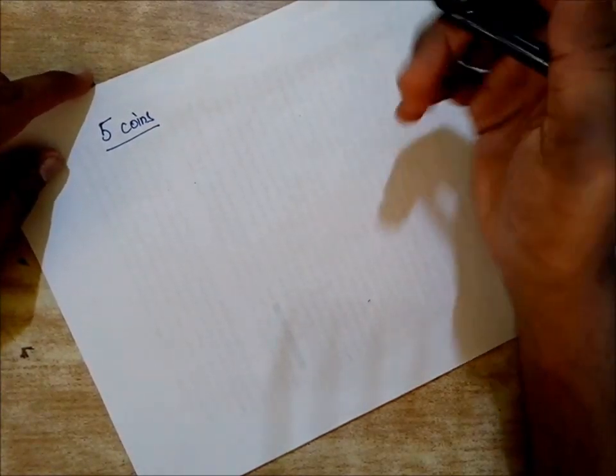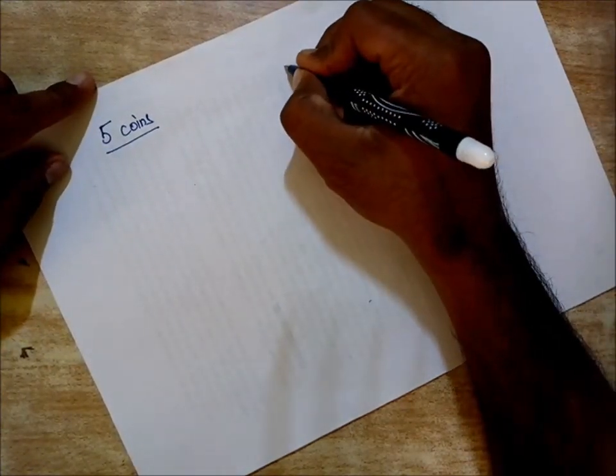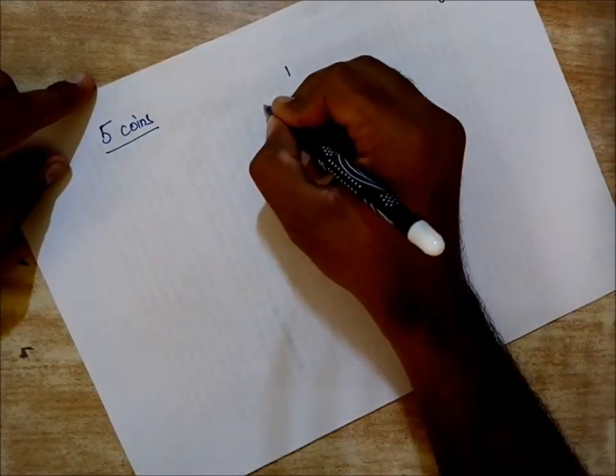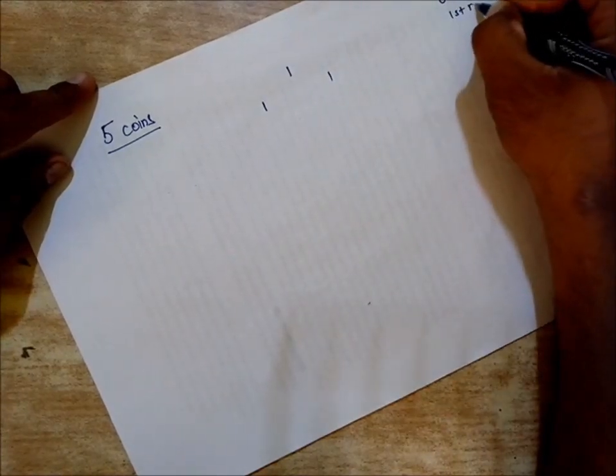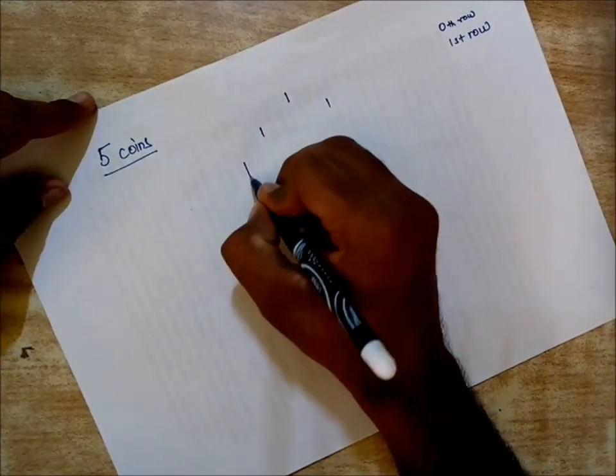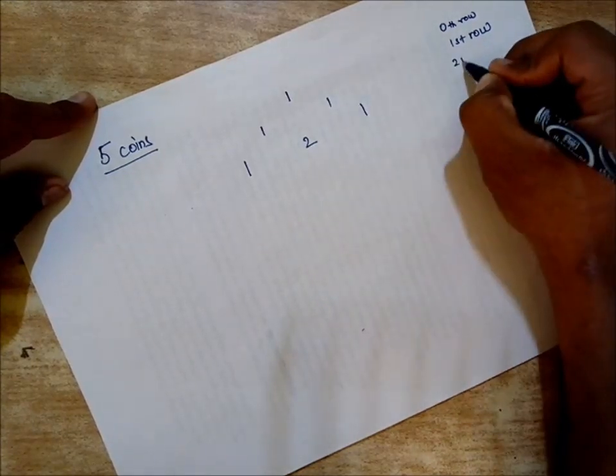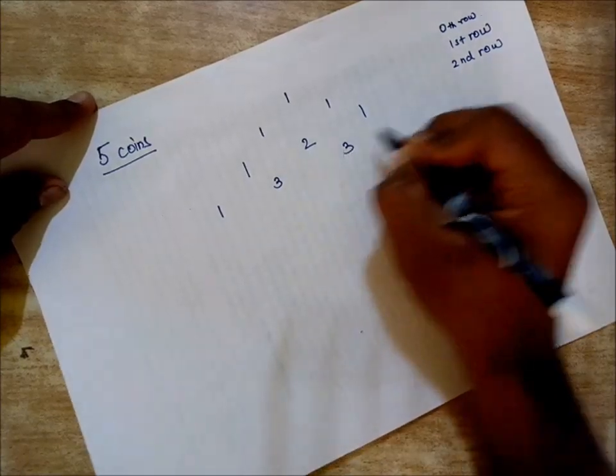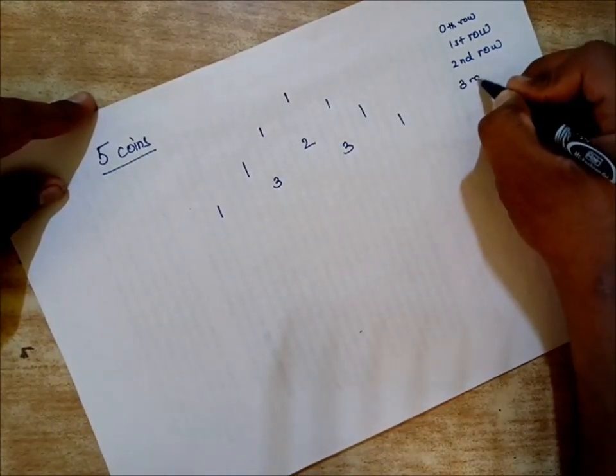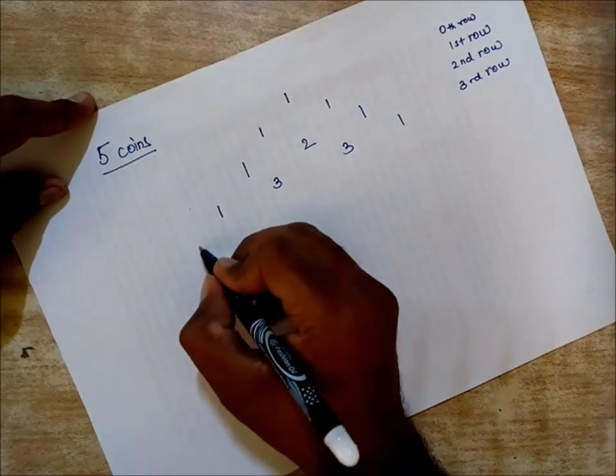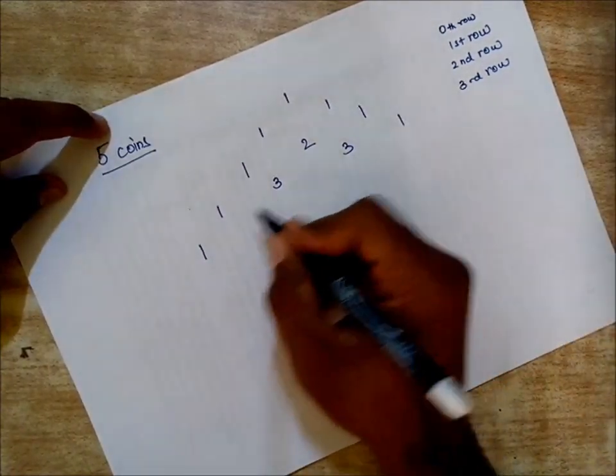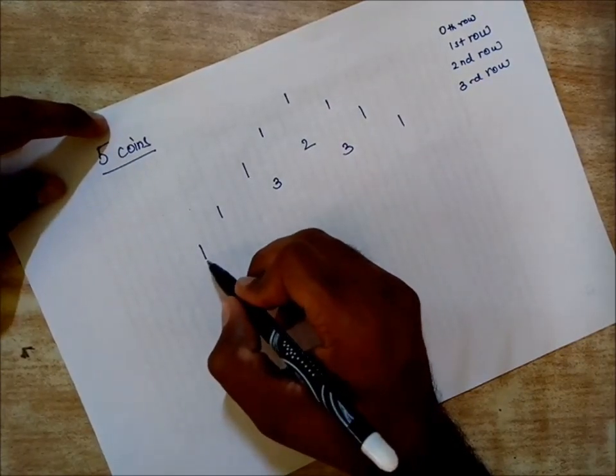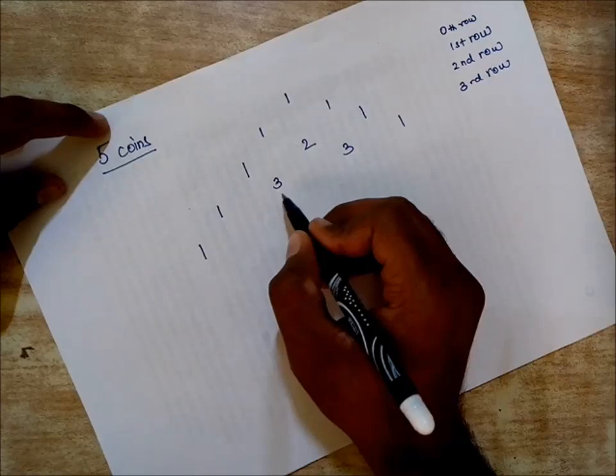This is row zero, this is the first row, this is the second row, this is the third row. I suppose you guys know how to calculate Pascal's triangle. It's simple: we start with one in each row, then add up the previous two elements.